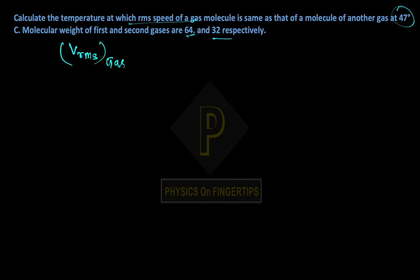1 equals V_rms of gas 2. V_rms equals root(3RT/M). So root(3R·T1